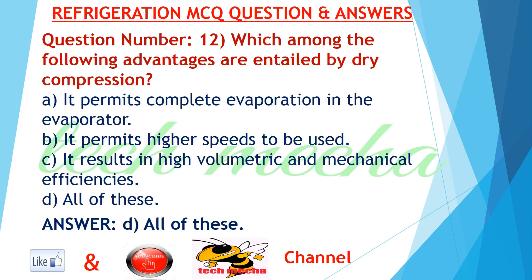Question number 12: Which among the following advantages are entailed by dry compression? A. it permits complete evaporation in the evaporator, B. it permits higher speeds to be used, C. it results in high volumetric and mechanical efficiencies, D. all of these. Answer: D. all of these.